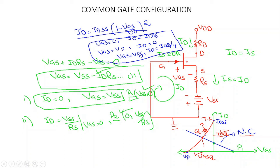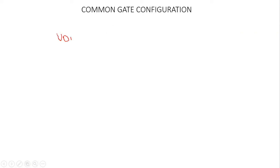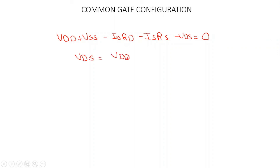To find VDS, we apply KVL around the output loop. Because both sources are effectively in the loop, we get: VDD + VSS − ID·RD − IS·RS − VDS = 0. Rearranging, and since IS = ID, we get VDS = VDD + VSS − ID·(RS + RD). This is our third equation and is important for finding VDS.